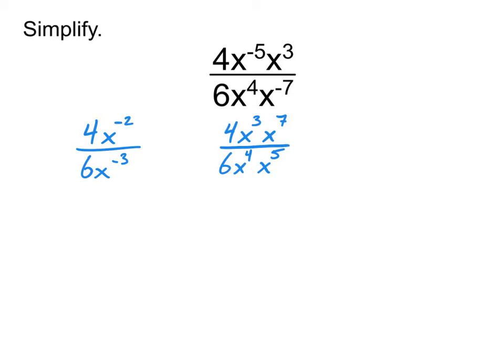And so on that first one, the left side one, you probably would have started this one by dealing with the negative exponents from that point. And so then it would become 4x cubed over 6x squared.